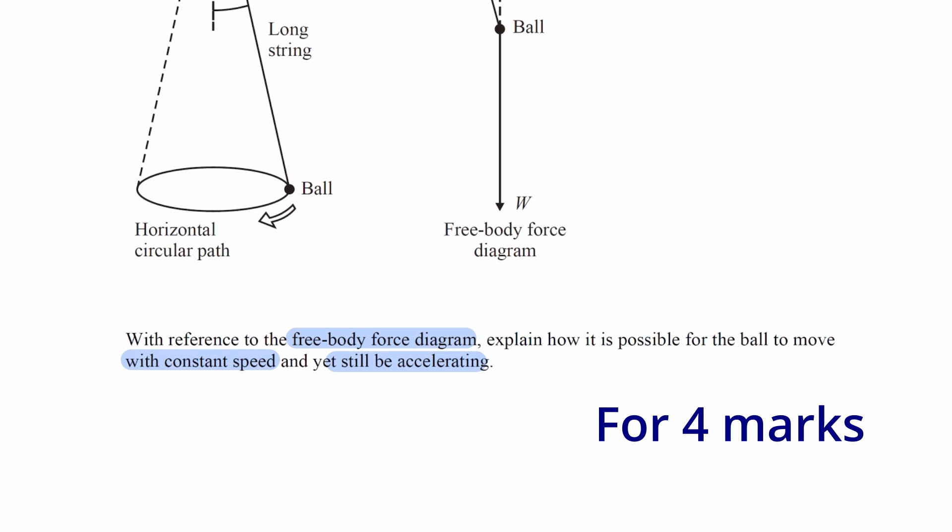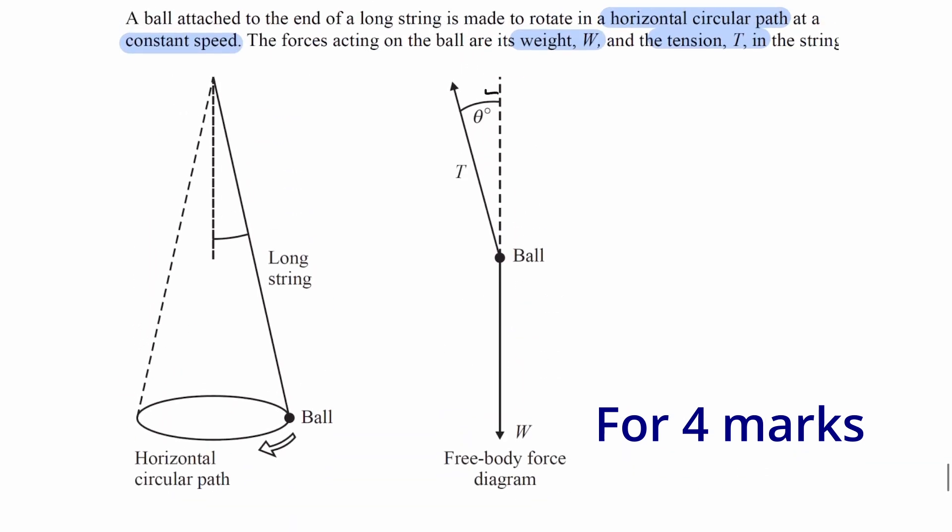Let's start with the constant speed part. If we look at the ball's motion from above, so from this direction here, then the ball is moving in a circle like this. This is the centre of the circle. Let's say we're considering the object to be here right now, it's moving this way, tangential to the circle.